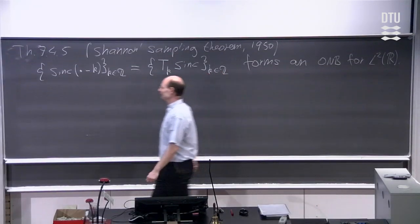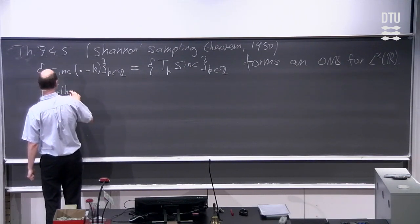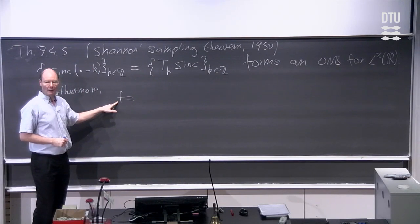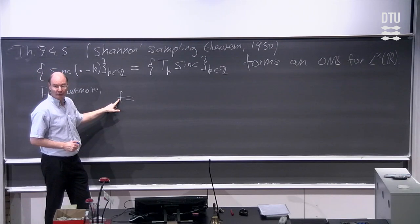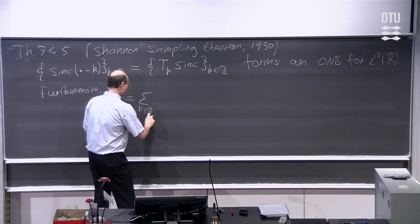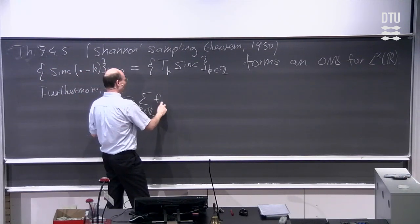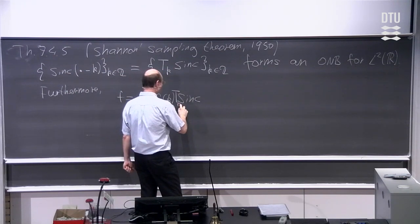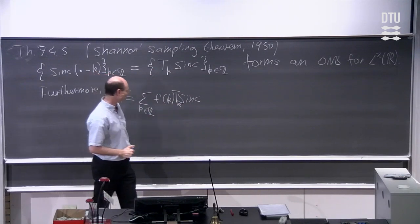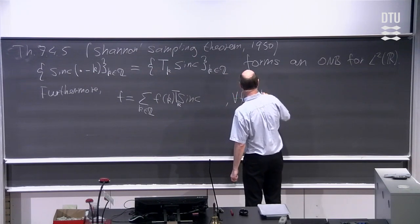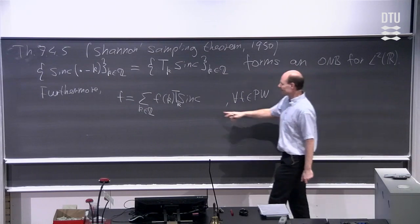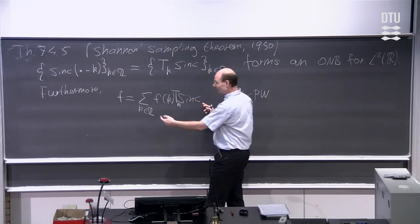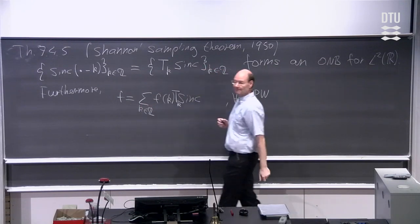We can say even more than that — there are two further statements. First, any function f belonging to the Paley-Wiener space can be written as the sum over k in the integers of f(k) times T_k sinc. This holds for all f in PW. The way you should look at this identity is as an infinite series that takes place in the Paley-Wiener space, which is a subspace of L2. So the convergence of this series is in the space L2.